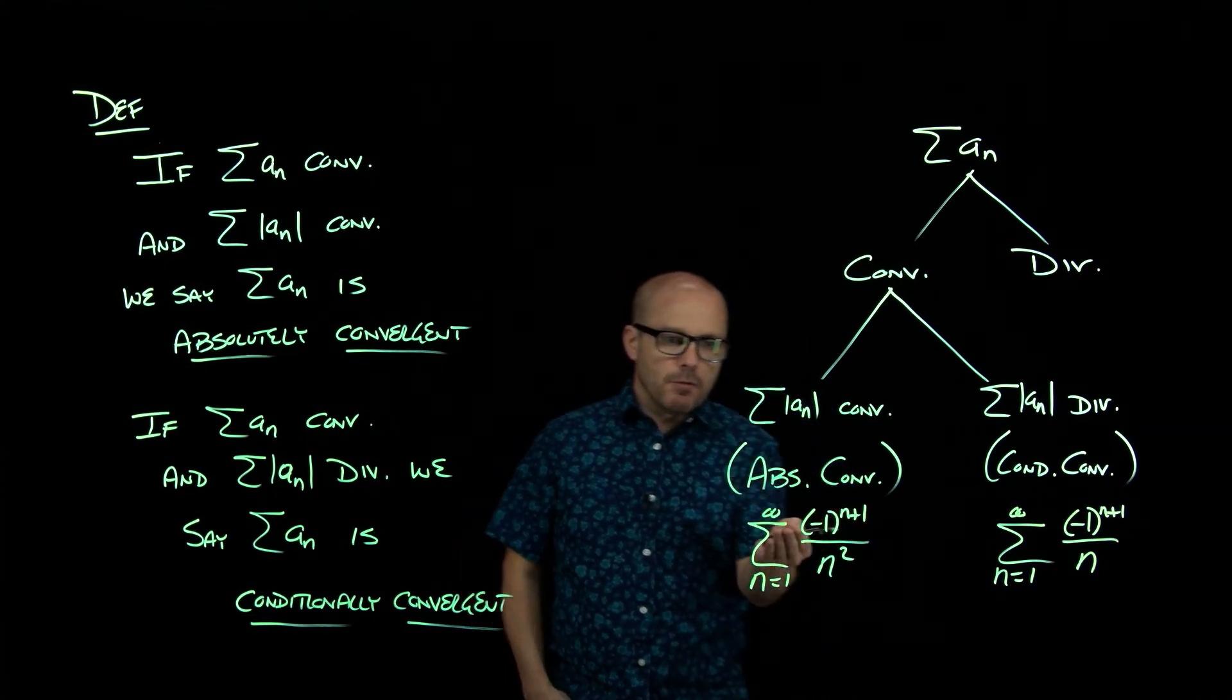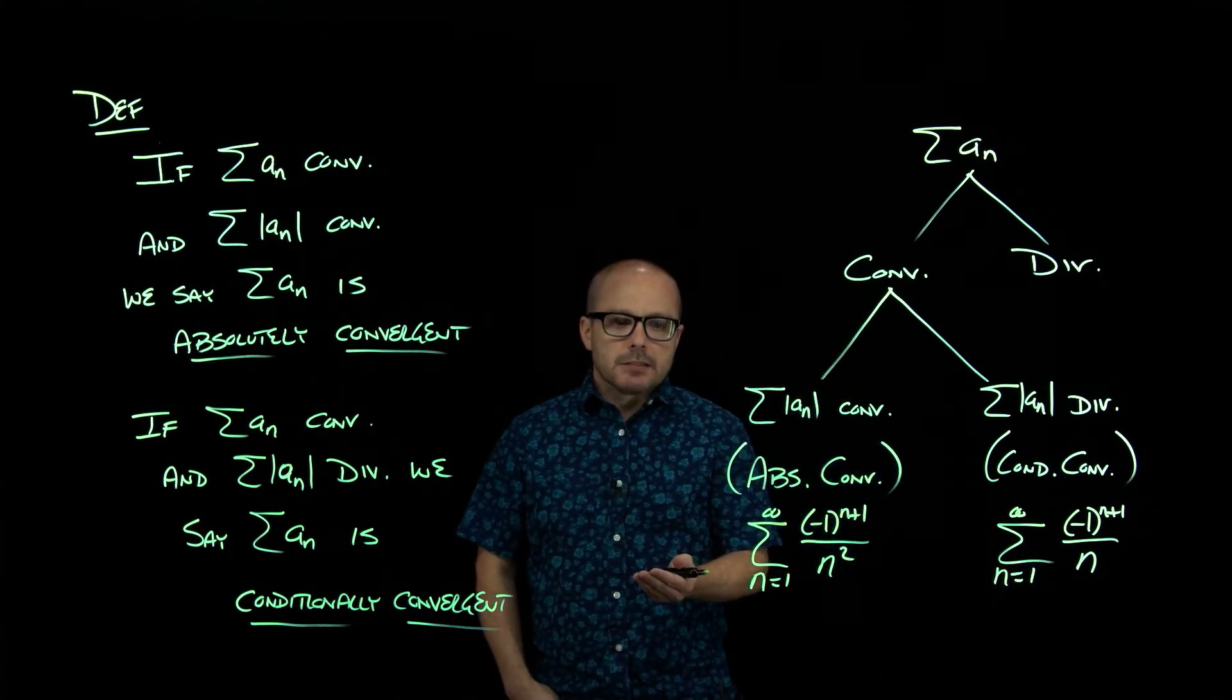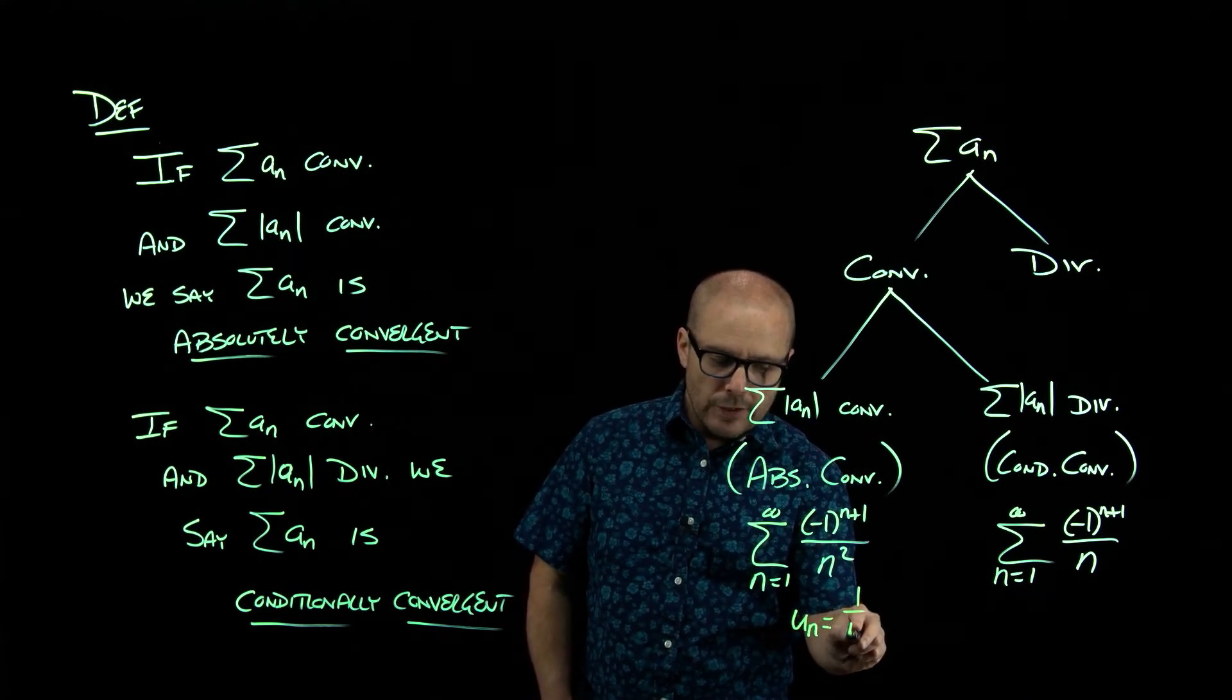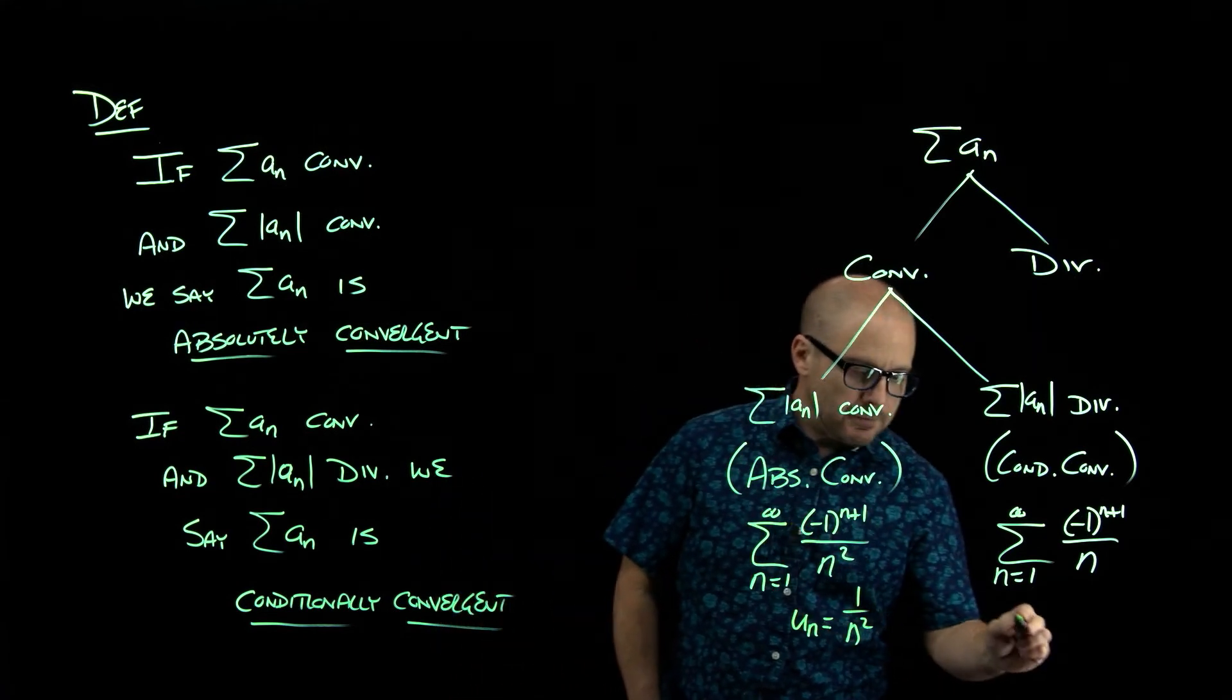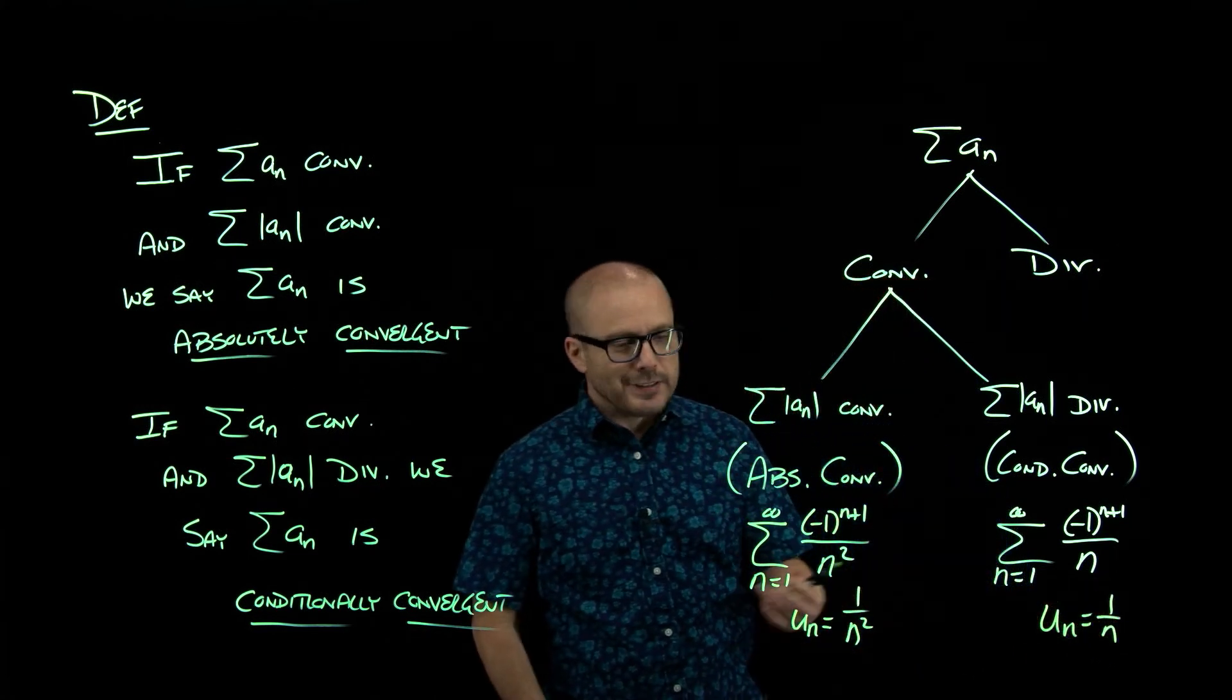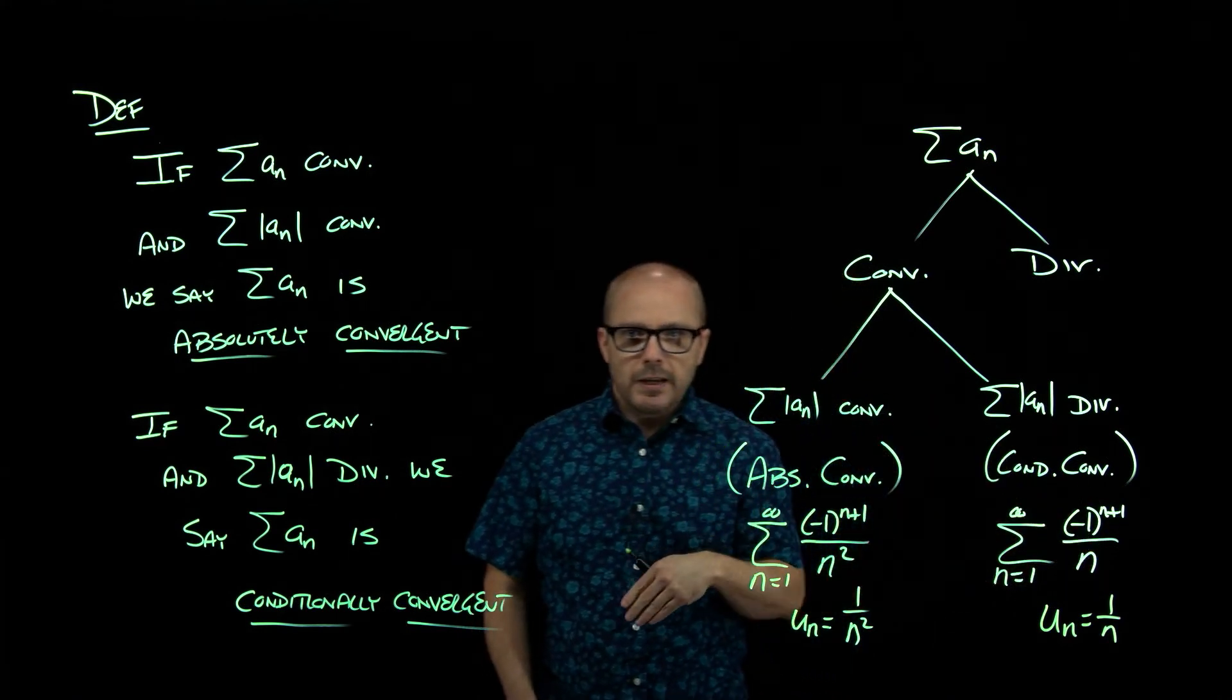Think about that a second. These are both alternating series. You could make an argument, the u sub n's here are one over n squared. Those are positive decreasing heading to zero, positive non-increasing headed to zero. Here the u_n's are one over n, also positive non-increasing headed to zero. So these are both convergent series. They converge by AST.